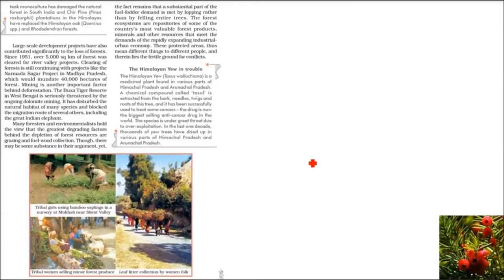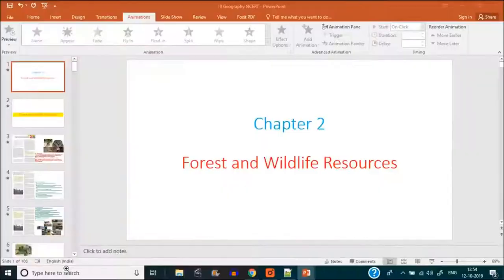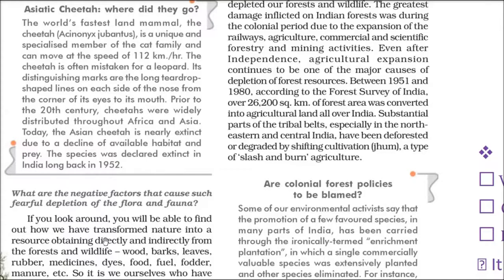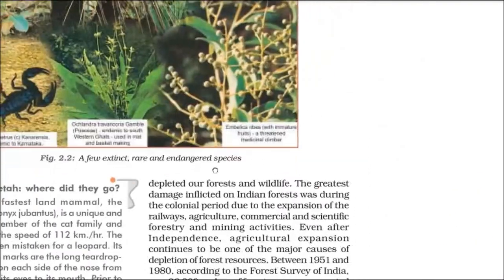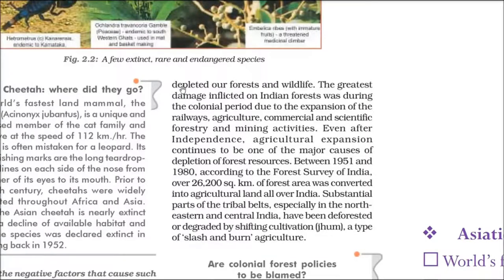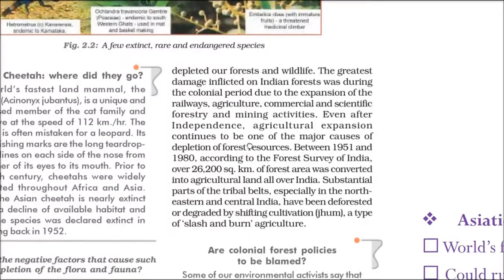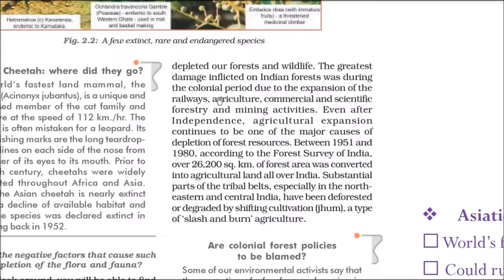We need to understand why this has happened. We are transforming nature to meet our needs — wood, bark, leaves, rubber, medicines, dyes, food, fuel, fodder, manure — we get all of these from nature, and in doing so we are depleting forests and wildlife. This started during the colonial rule when railways and agriculture were expanded, commercial activities increased, scientific forestry was introduced, and mining activities began. Even after independence, these continued.